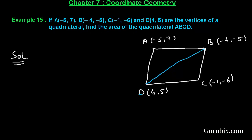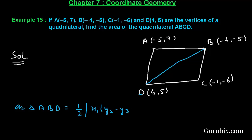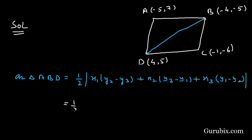So let us find the area of triangle ABD. We shall apply the formula: area = (1/2) |x1(y2 - y3) + x2(y3 - y1) + x3(y1 - y2)|. Here, x1 is -5, y2 is 5, y3 is -5.